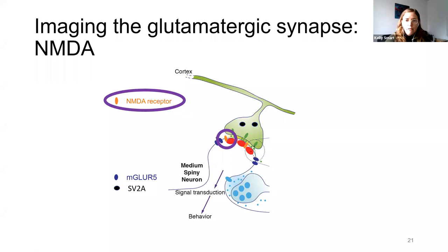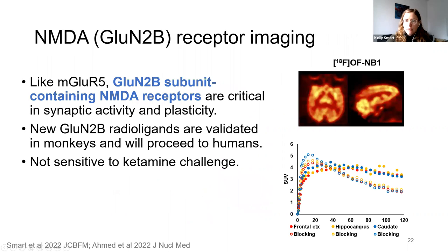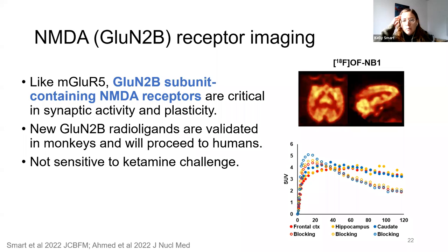Another thread of my postdoc work was validating radio tracers for NMDA receptors — specifically a tracer that gives a reliable measure of GluN2B-containing NMDA receptors, a subtype especially important in regulating synaptic plasticity. We confirmed the imaging characteristics in monkeys; it's in good shape to move into humans and easy to quantify GluN2B well. We also tested whether it would be sensitive to changes in glutamate using an acute ketamine challenge, and it did not seem to be — so we have another stable measure of a synaptic plasticity marker that will be a useful postsynaptic counterpart to SV2A.